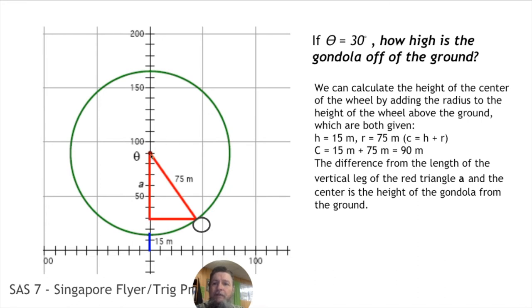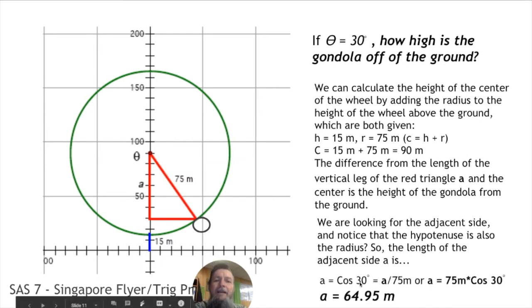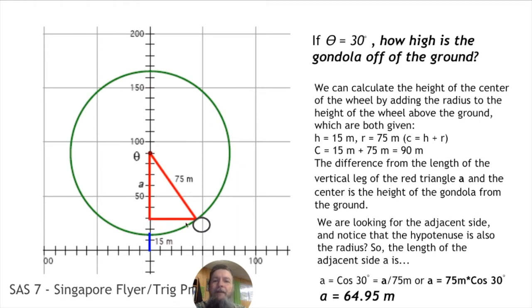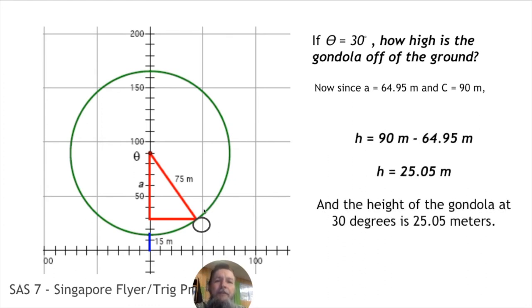The difference from the length of the vertical leg — that red adjacent portion to this 30-degree angle — and this height gives us the distance we need. We're looking for the adjacent side; the hypotenuse is also the radius. So A equals 75 meters times cosine of 30, giving A = 64.95 meters. The height off the ground is 90 minus 64.95, which is 25.05 meters. We're going to find the height of the gondola as it goes all the way around and then plot that height over time.